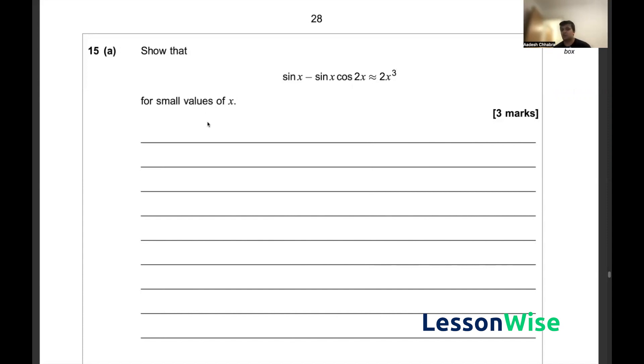Essentially this is just small angle theorem where we know for small angles sin x is approximately equal to x and cos 2x is approximately equal to 1 minus 2x squared by 2.